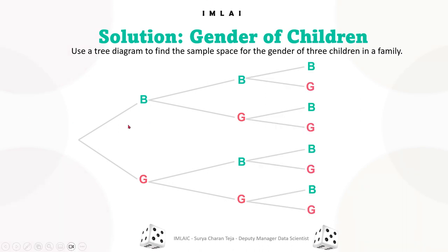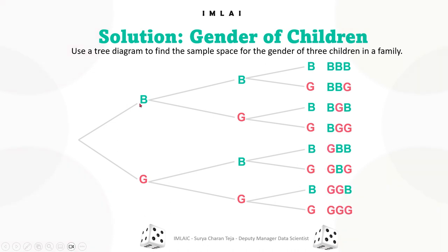Now the combinations are: boy-boy-boy (BBB), boy-boy-girl (BBG), boy-girl-boy (BGB), boy-girl-girl (BGG), girl-boy-boy (GBB), girl-boy-girl (GBG), girl-girl-boy (GGB), and girl-girl-girl (GGG). These are all the combinations we can have.